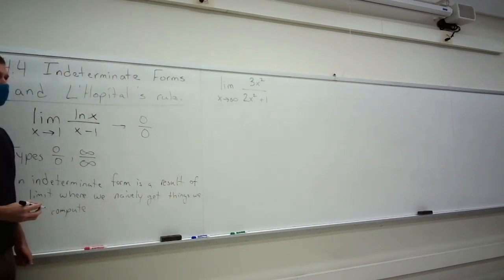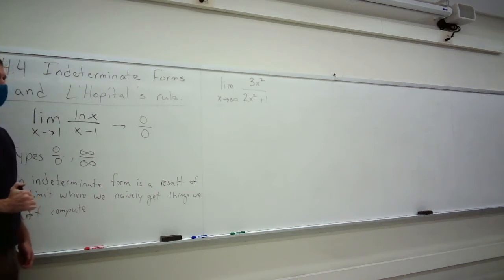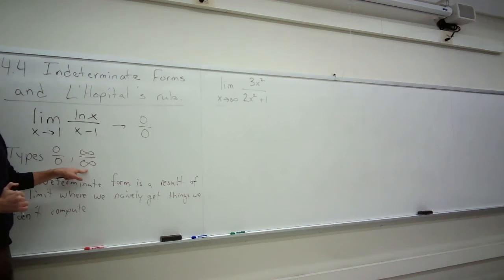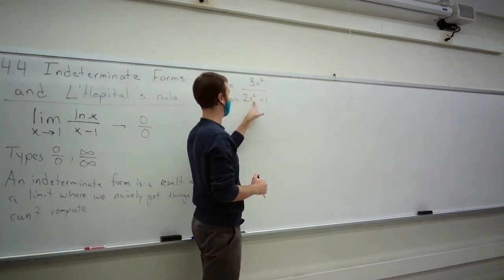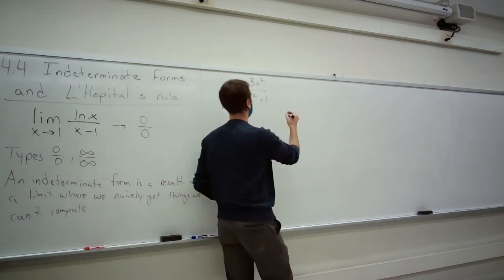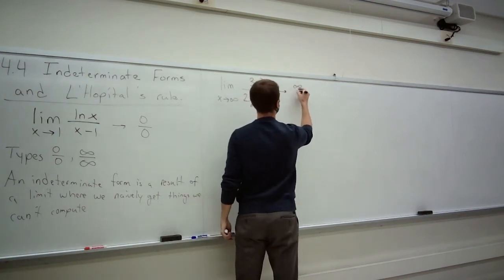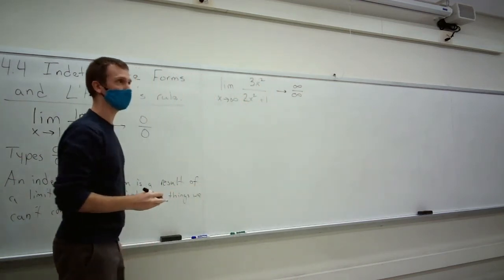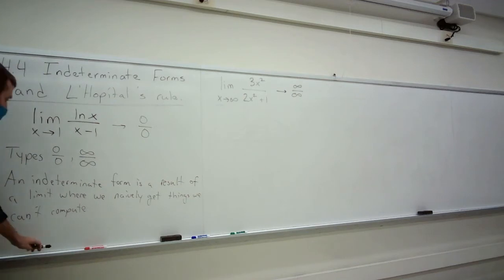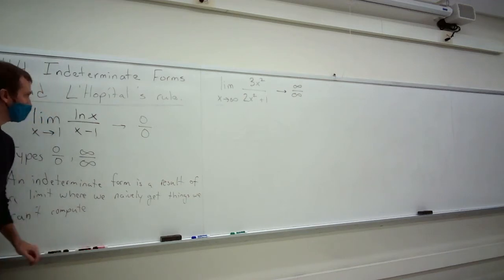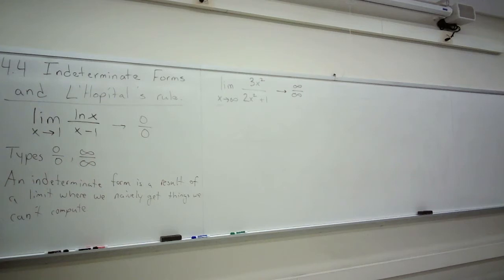What is this indeterminate form? If you naively take the limit, the top goes to infinity and the bottom goes to infinity — it's another indeterminate form, infinity over infinity. And we already know a trick for that one. So these are the first two types of indeterminate forms.